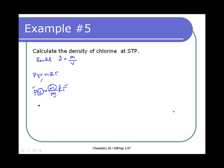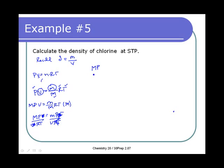Rearranging: first multiply both sides by molar mass to get M·PV = m·RT, then divide both sides by RT: M·P/RT = mass/volume = density. So density = molar mass × pressure / (R × temperature).